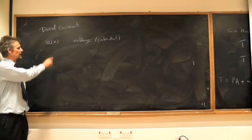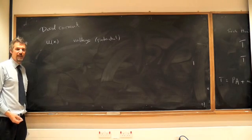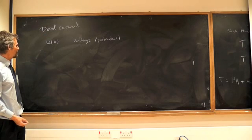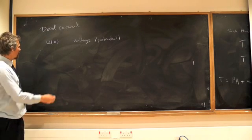Voltmeters have two leads, a red one and a black one. You have to keep the black one somewhere, right? It doesn't matter because, in the end, only differences in voltage make any sense. But you just keep the black lead somewhere, this is what—the red lead in, this is what you read on the voltmeter.